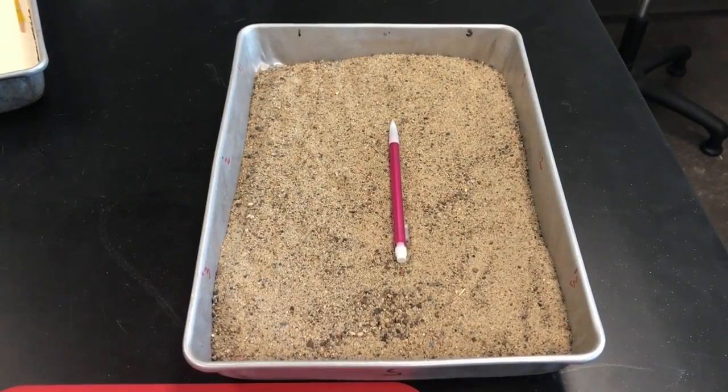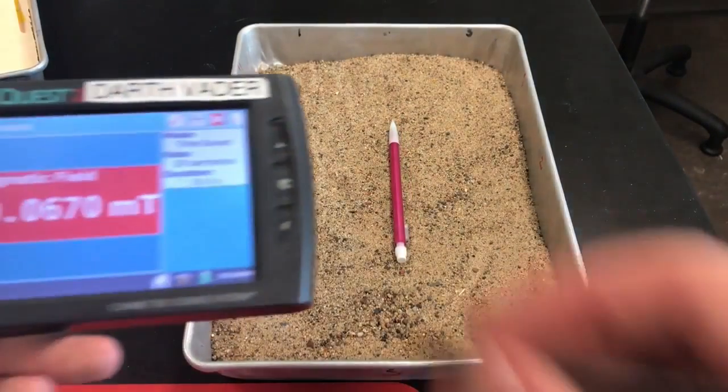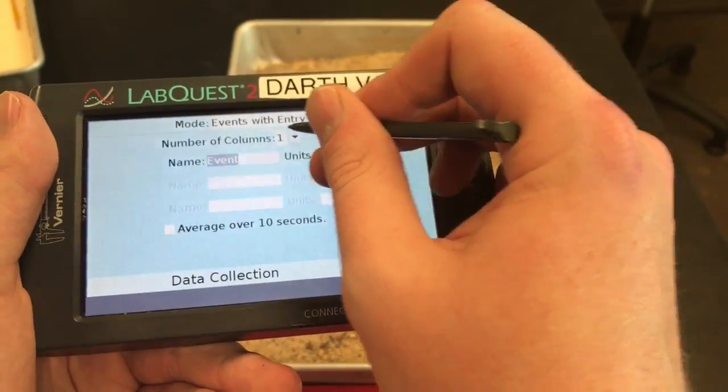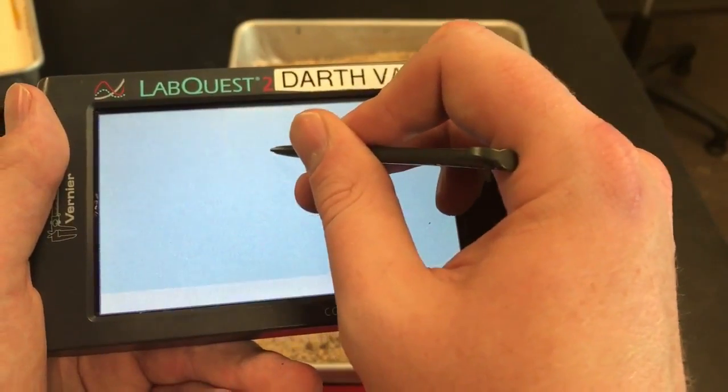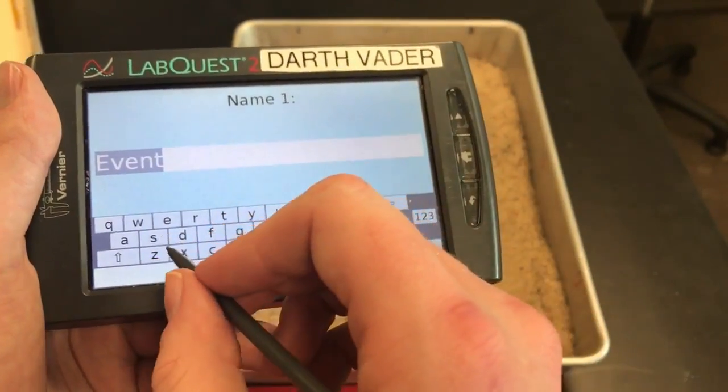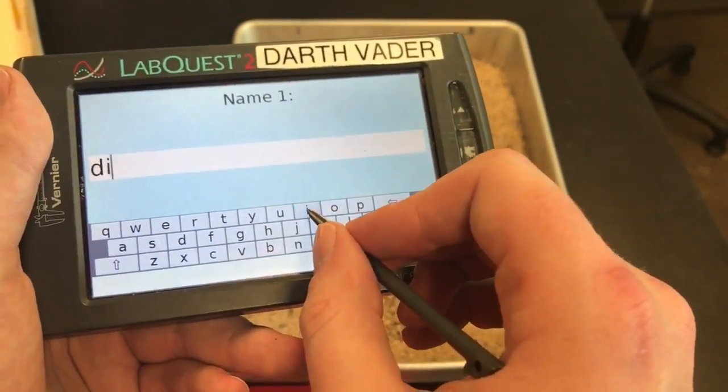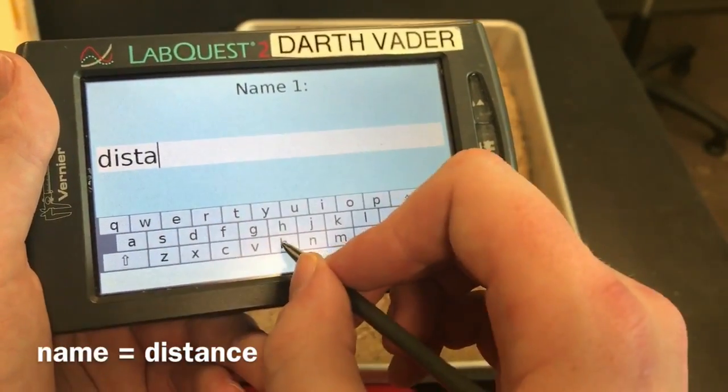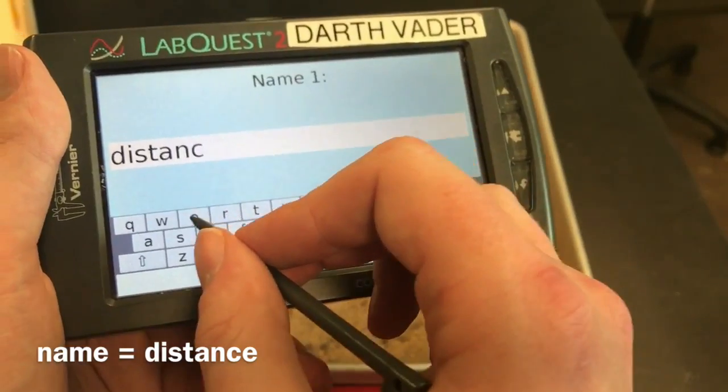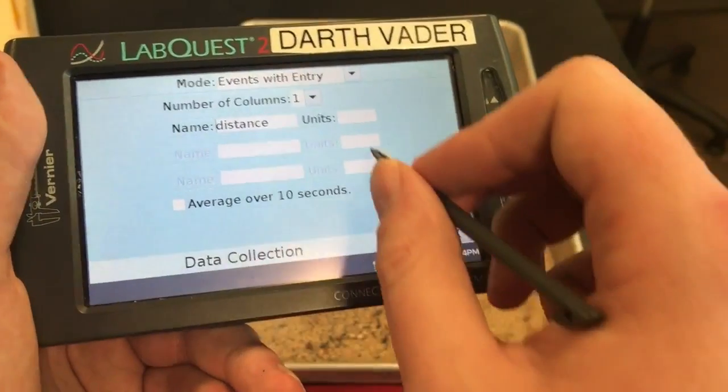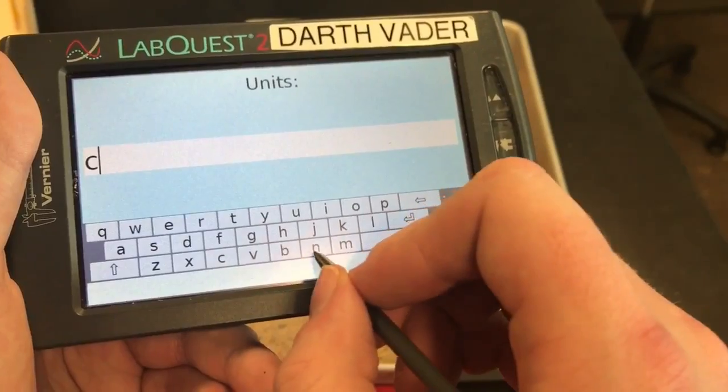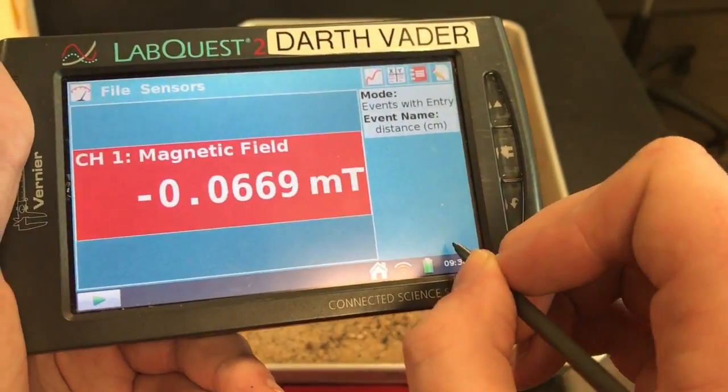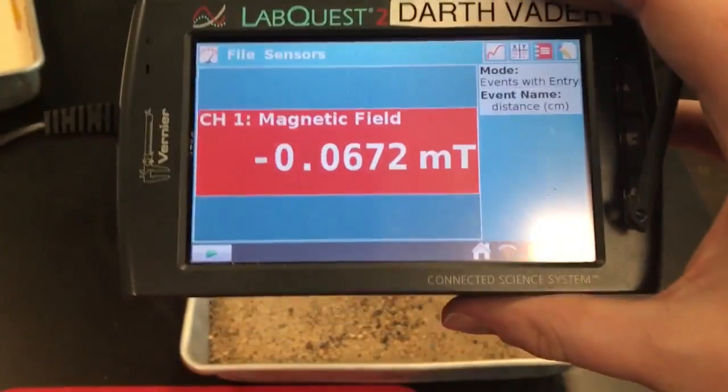Before we run anything, let's set up our LabQuest device. So the mode for this experiment is going to be events with entry. Our name is going to be distance, so what we're measuring is distance here. And the unit for that is going to be in centimeters.